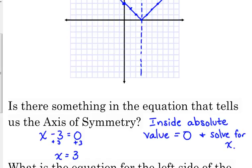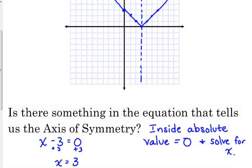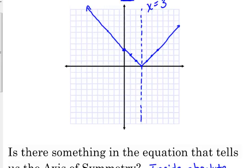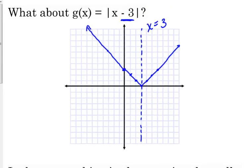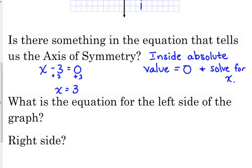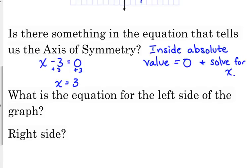That told us the inequality part of our piecewise equation. Can we write the linear equation that represents the left side of this function? We need slope and y-intercept. The slope of the left side is negative 1, and the y-intercept is 3. So the equation for the left side of the graph is negative x plus 3.